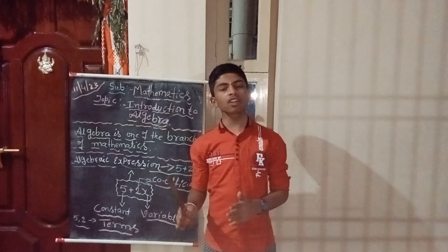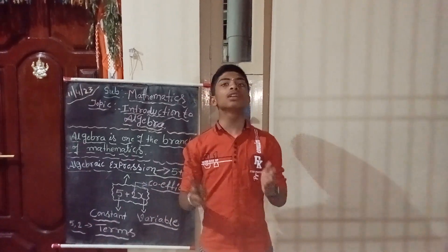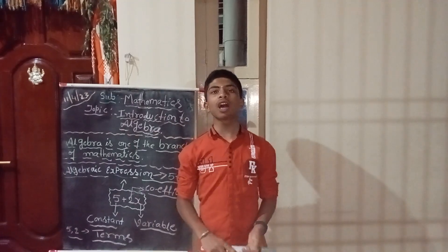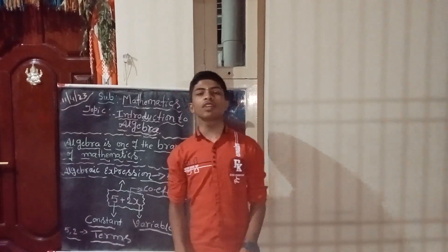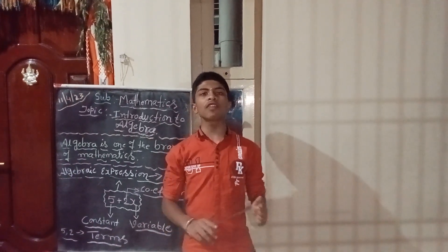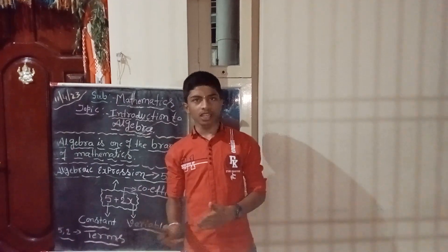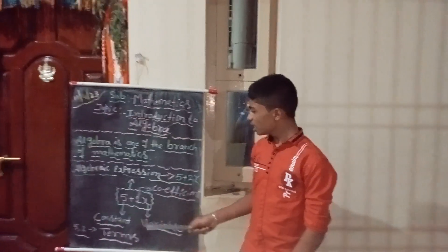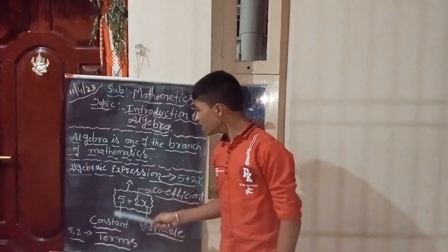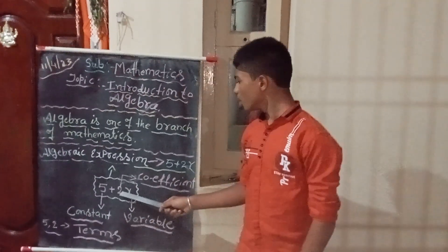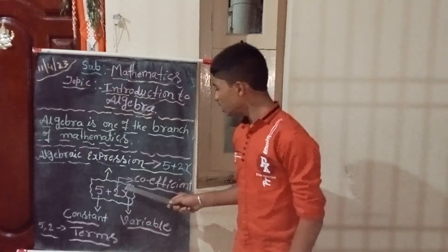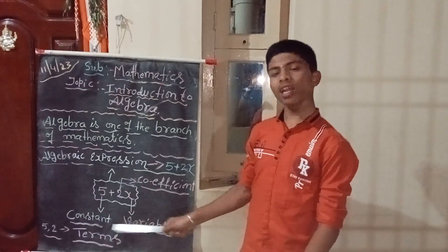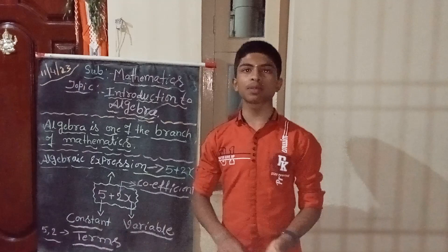Algebra is a branch of Mathematics. It deals with variables and constants connected with arithmetic operations. We need to see an example of an algebraic expression. So, we have here: 5 plus 2x. Here, 5 is the constant, 2 is the coefficient, and x is the variable. This is an example of an algebraic expression.